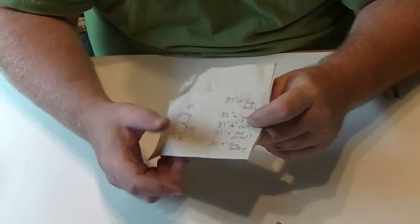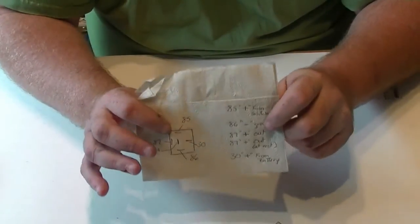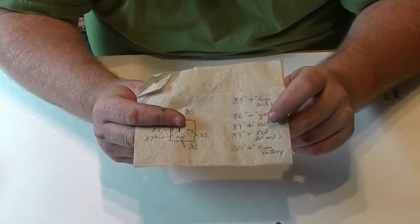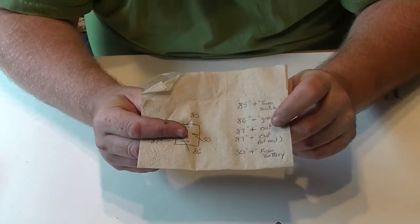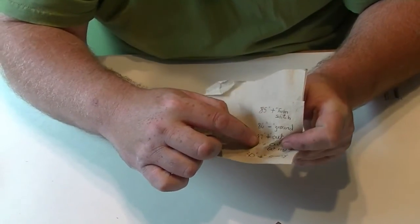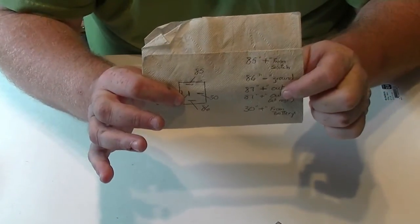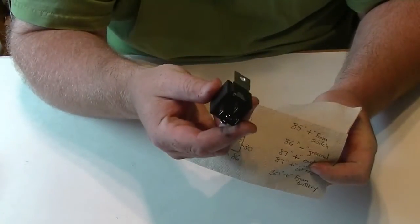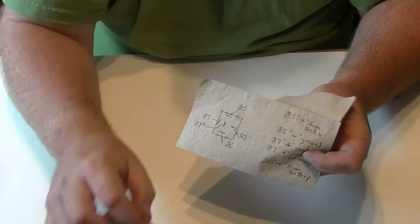Number 87 is your power out to your project. So that would be out to your fog lights, driving lamps, auxiliary lights, what have you. And in the case, I didn't mark it here, but so when you mark it down, put 87A. Alright? Because that's for the center terminal on the one that has two outlets.